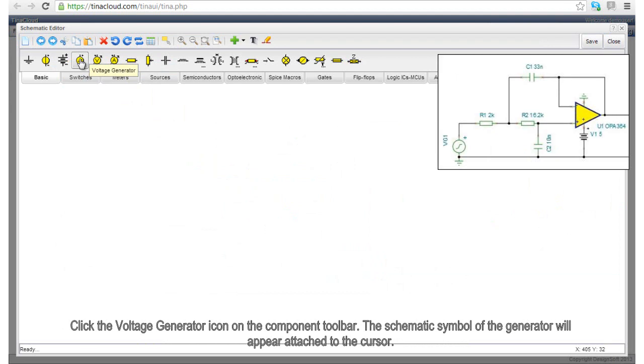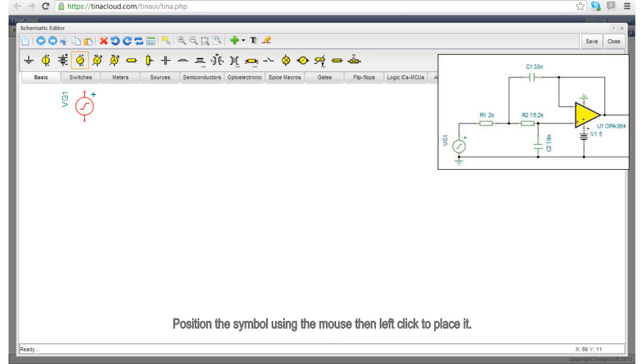Click the voltage generator icon on the component toolbar. The schematic symbol of the generator will appear attached to the cursor. Position the symbol using the mouse, then left-click to place it.